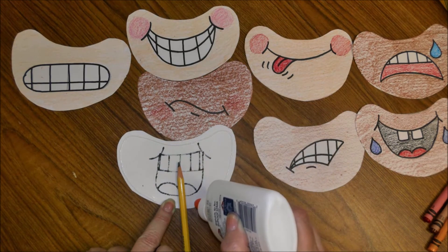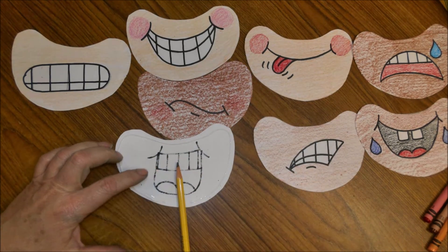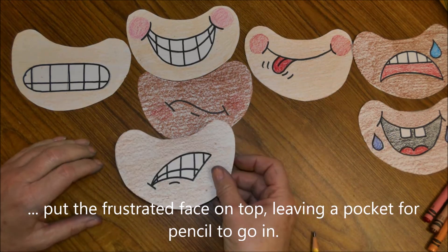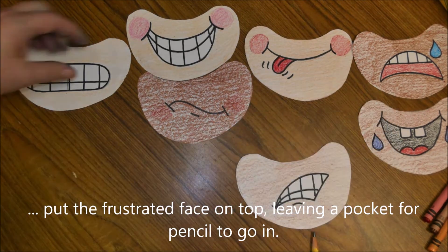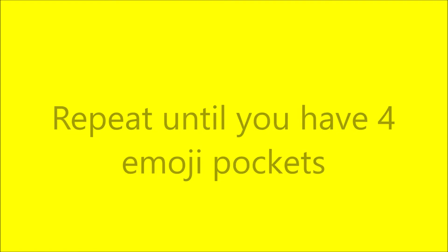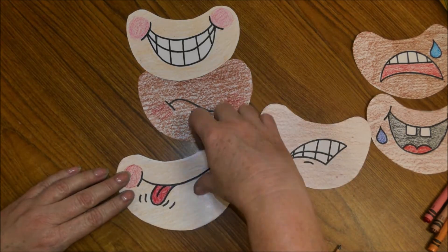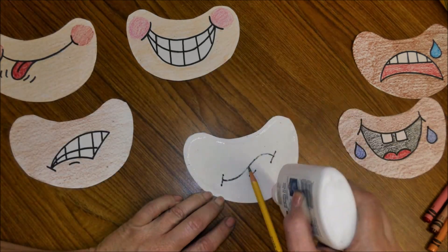No glue where the X is. Put the frustrated face on top, leaving a pocket. Repeat until you have four emoji pockets. Remember, don't glue where the pencil is or that X. You're going to keep doing this until you have four pockets.